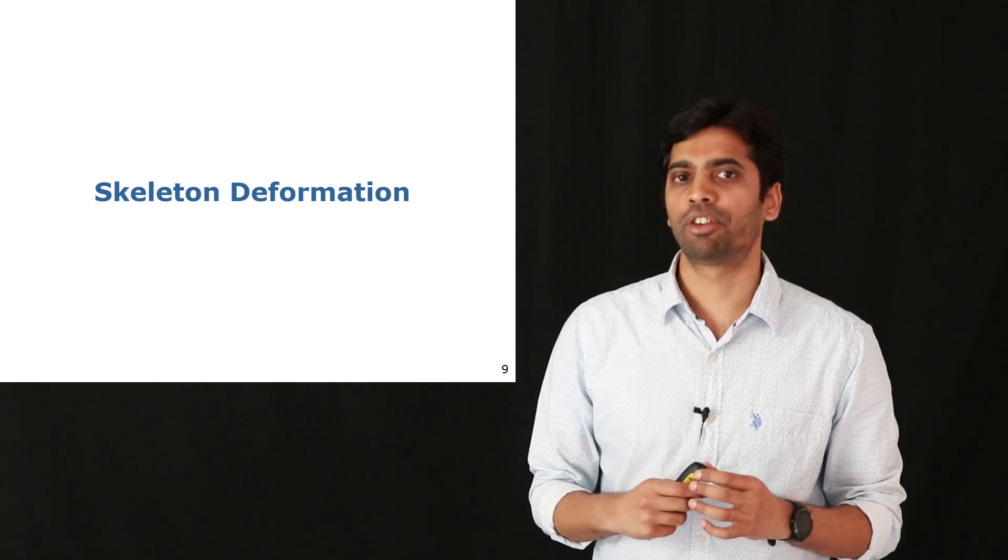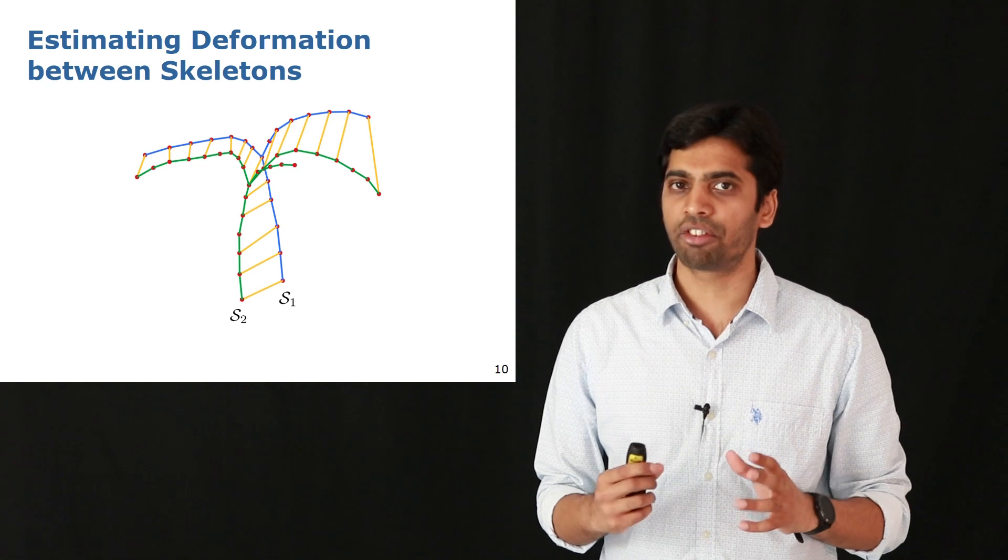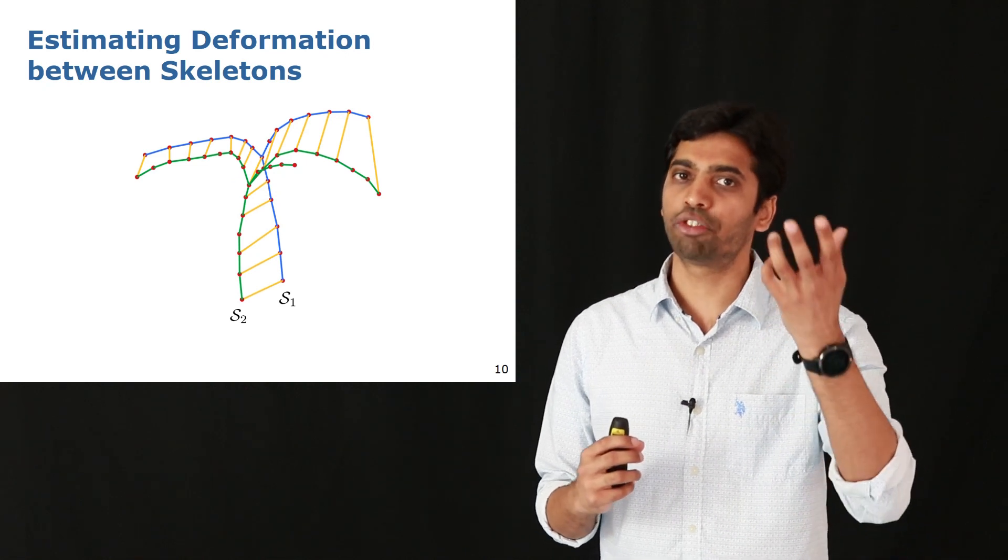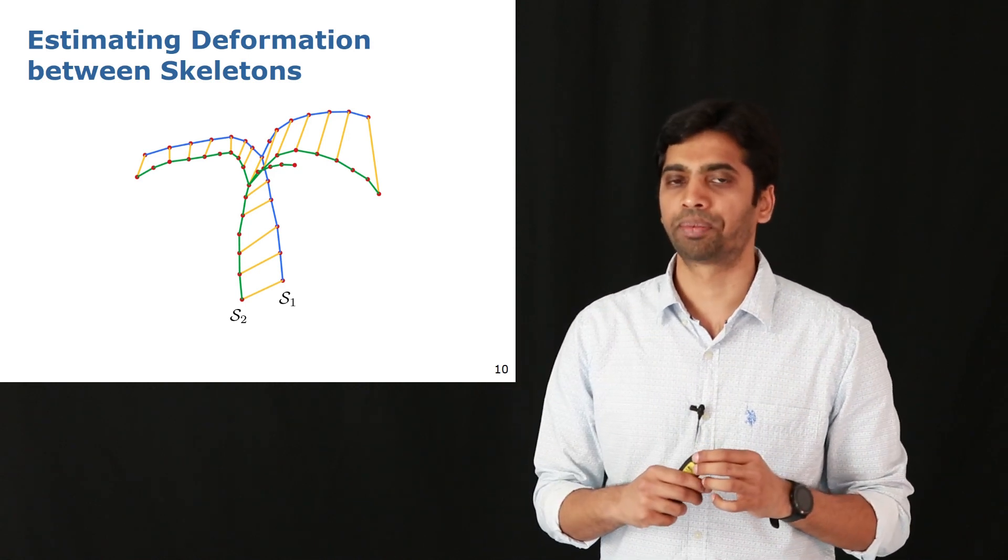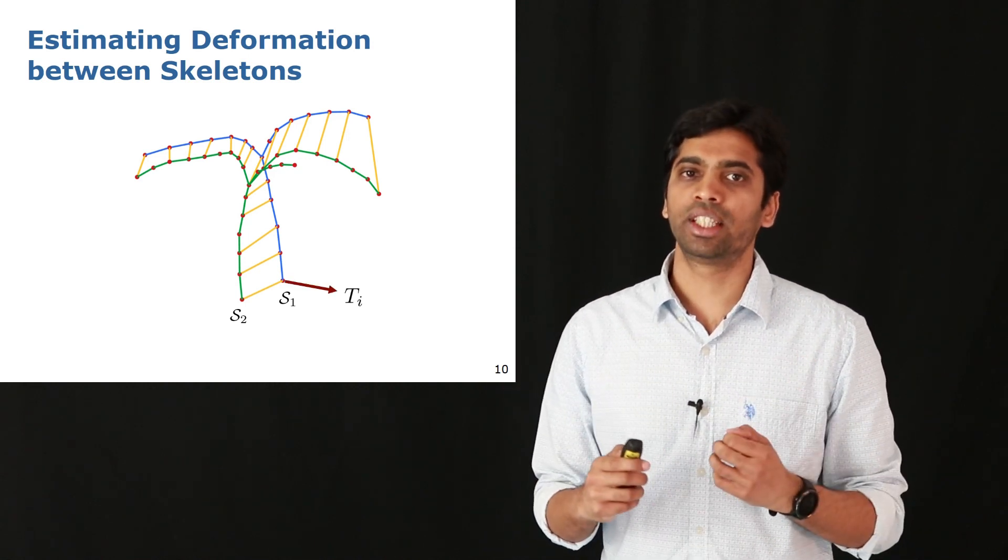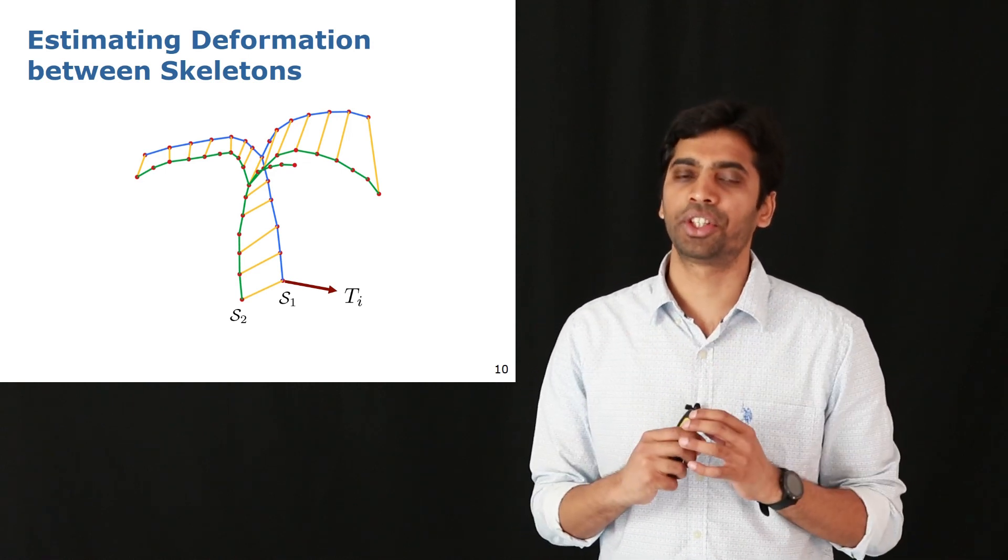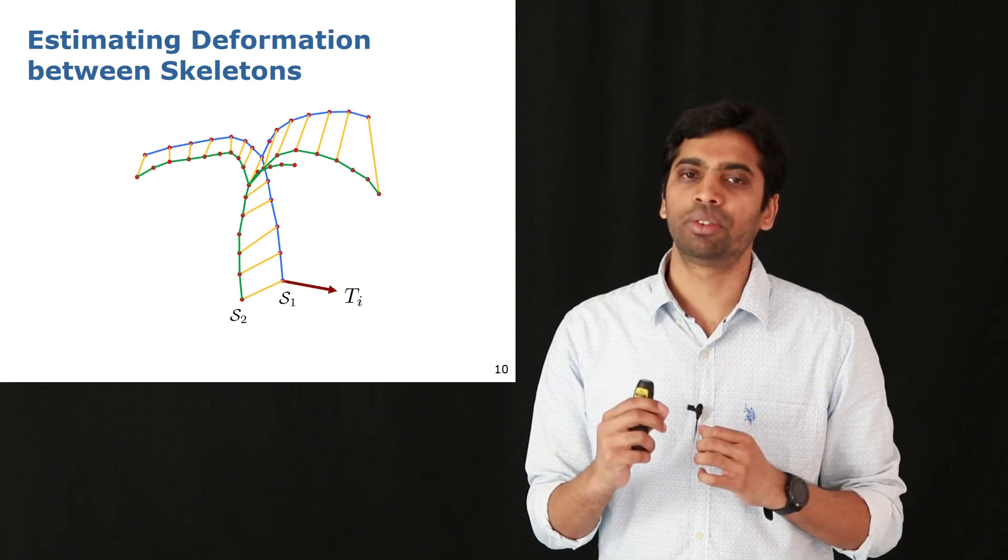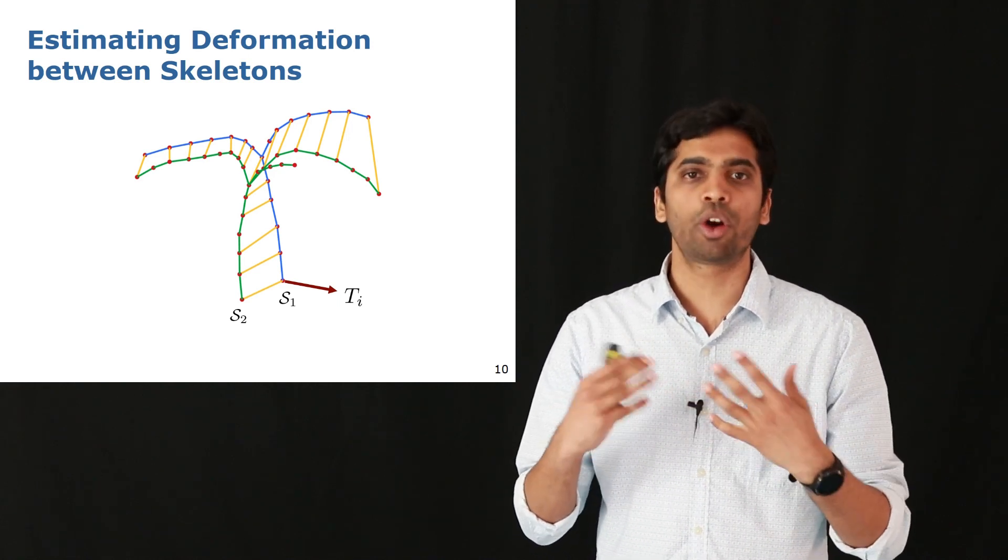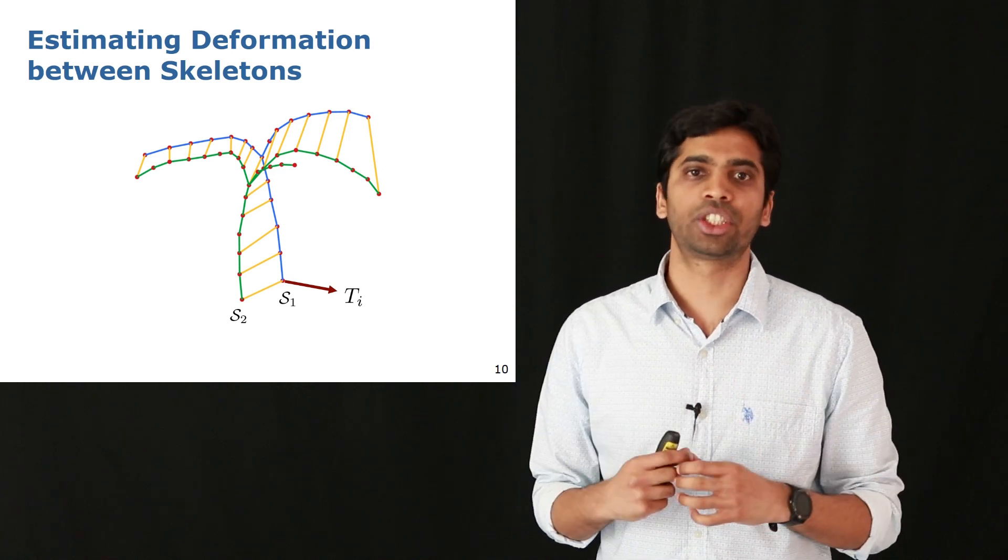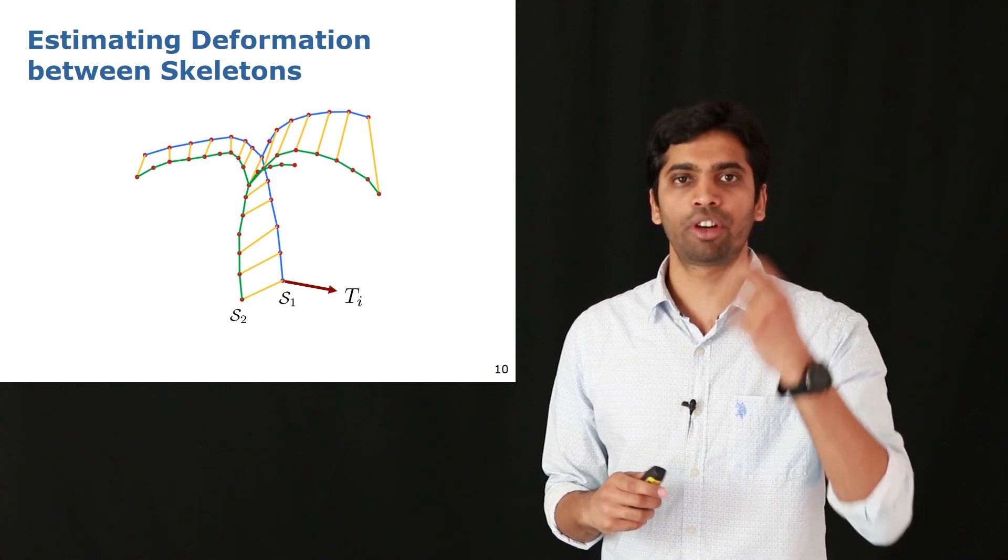Now we move to the second step of our process where we use the correspondences to estimate a deformation between the source skeleton S1 into the target skeleton S2. The way we do this is to assign with each node of skeleton S1 an affine transformation. We choose an affine transformation because it can track shearing and scaling along with rotation and translation components. So we attach one such affine transformation to each node.